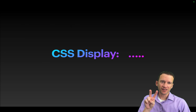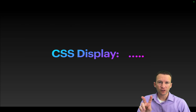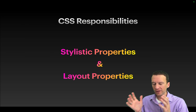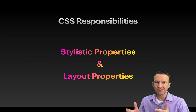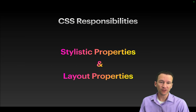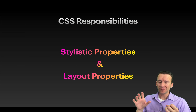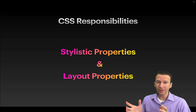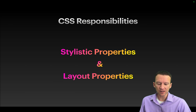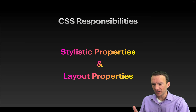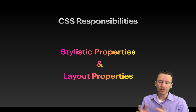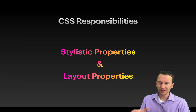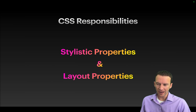CSS is kind of broken down into two main categories. The first category is how does CSS deal with stylistic properties of the HTML — things like color, font, weight, and spacing, the UI and UX aesthetic of the website. The other part of CSS is the layout. The display property, which is what we're going to be looking at in detail today, has to deal with the layout.